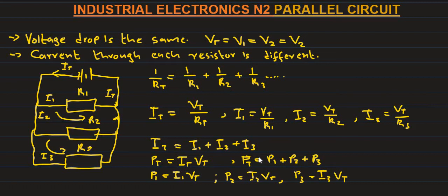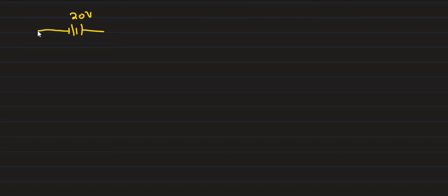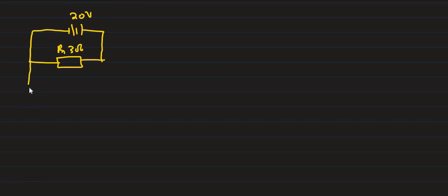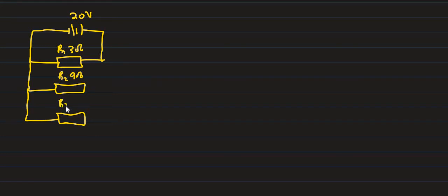So these are the formulas we use to calculate a parallel circuit. So R level — let's look at the example. We have a battery of 20 volts, then connected in parallel. Now resistor number 1: R1 equals 3 ohms. Resistor number 2: R2 equals 9 ohms. Resistor R3 equals 12 ohms.